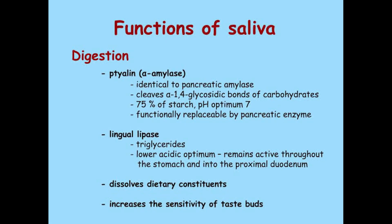The next function is the role of saliva in digestion. First, alpha amylase — identical to pancreatic amylase — cleaves alpha-1,4 glycosidic bonds of carbohydrates, digesting 75% of starch at an optimal pH of 7, and is functionally replaceable by the pancreatic enzyme. Second, lingual lipase acts on triglycerides with an acidic optimum and remains active throughout the stomach into the proximal duodenum. Third, saliva dissolves dietary constituents and increases sensitivity of the taste buds.